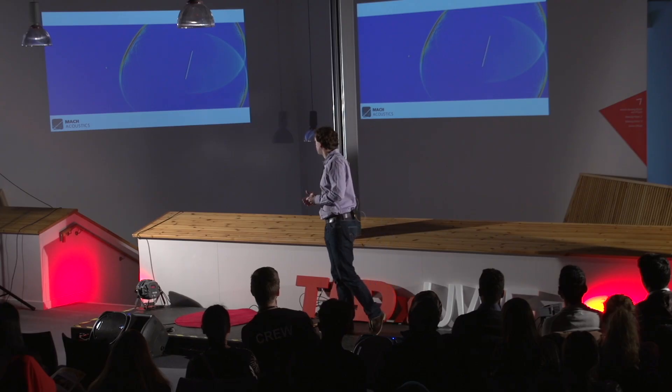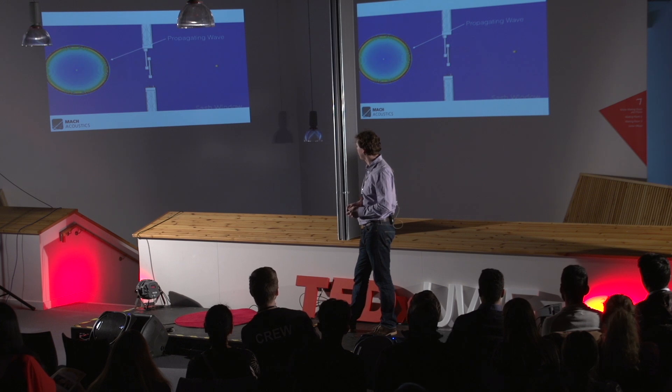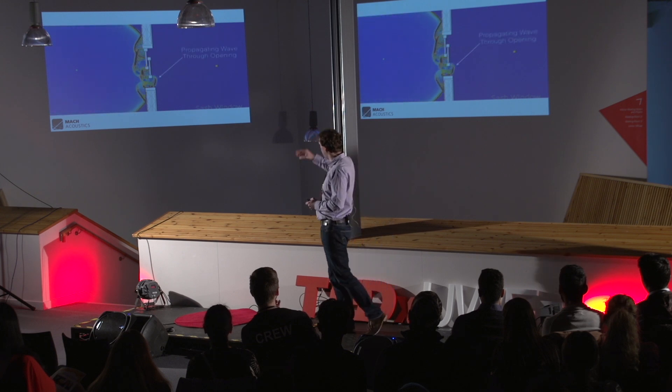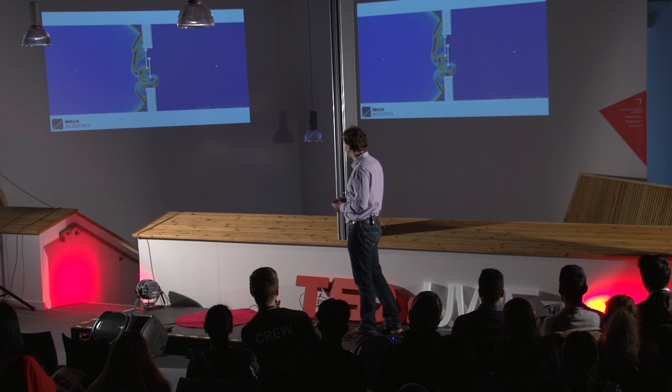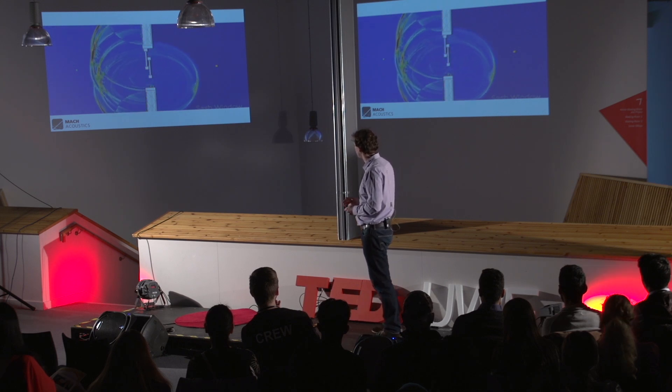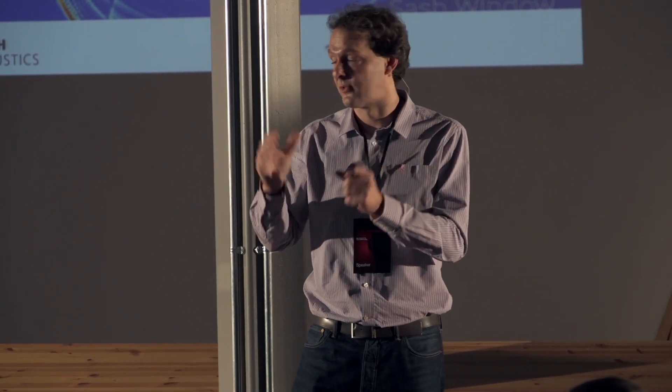So we can then take this technology and start to study the difference between a sash window and other types of windows. So that's the propagating wave. You can now see it reflecting off the structure. And you can see it coming through the opening and radiating into the room. That's fairly simple. And it's more or less what you would expect. It's a simple hole. What comes out the other side is round and spherical.